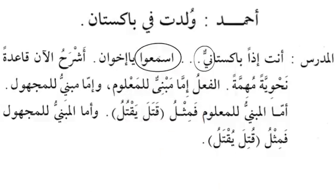So this is establishing the concept of ya al-nisbah - the ya of establishing relationship. Al-mudarris says: Anta idhan Pakistaniyyun. Now he's going to example number ten, eleven, wa Muhammad - and we'll explain those. Even though it is the same grammar we have done before, it's also about understanding the numbers and the maf'ul bihi.